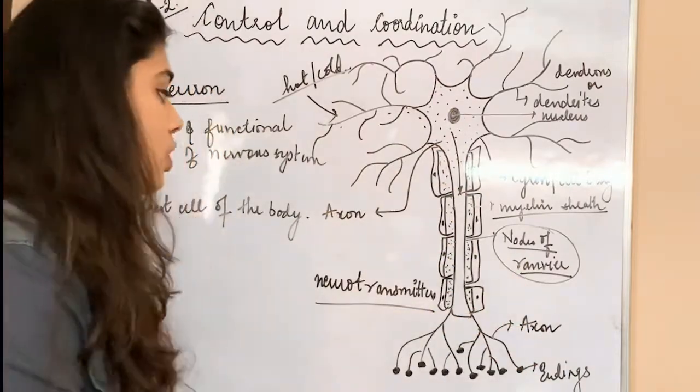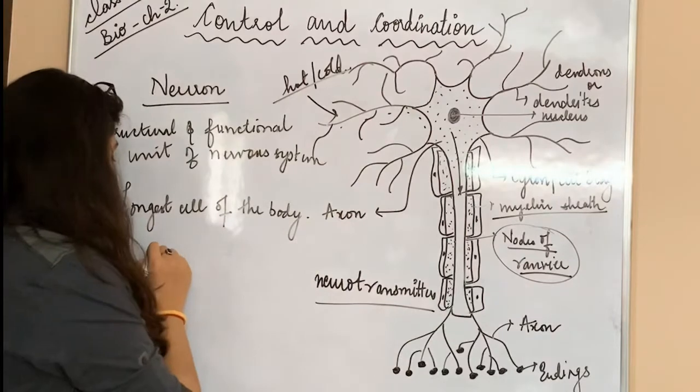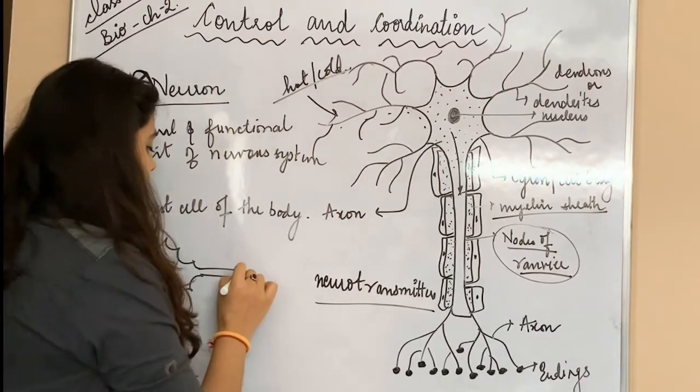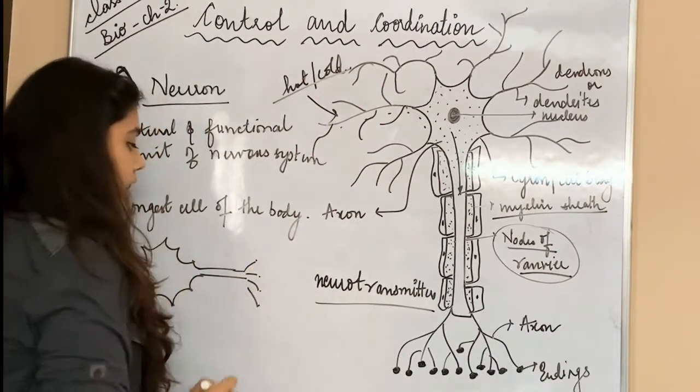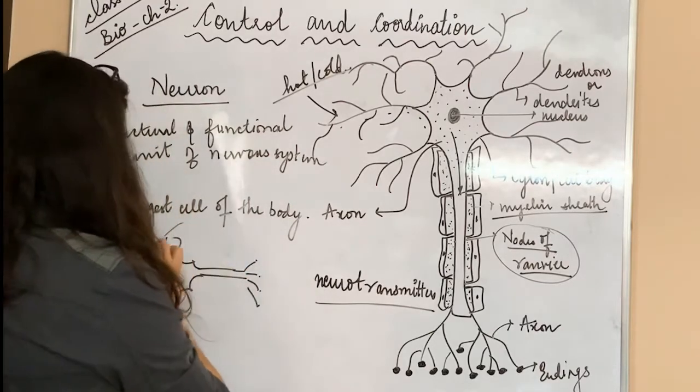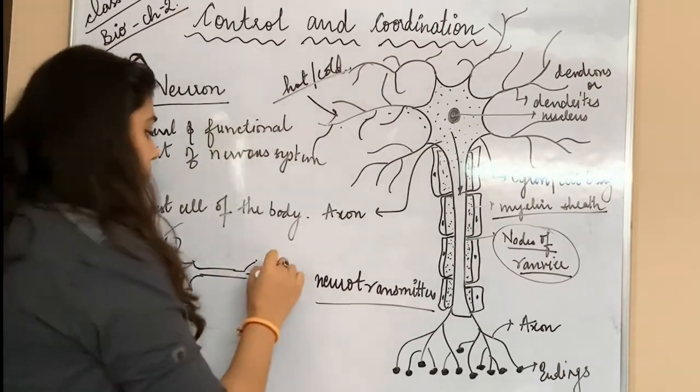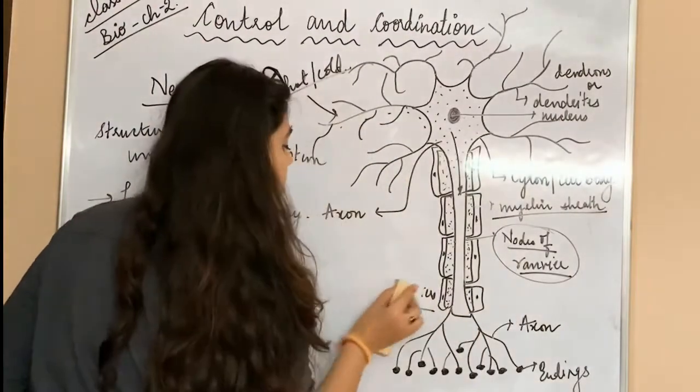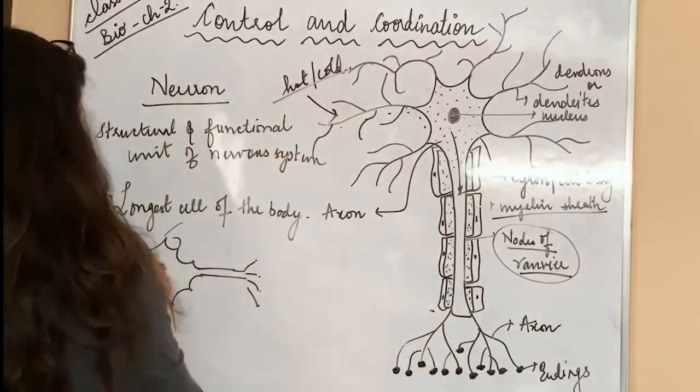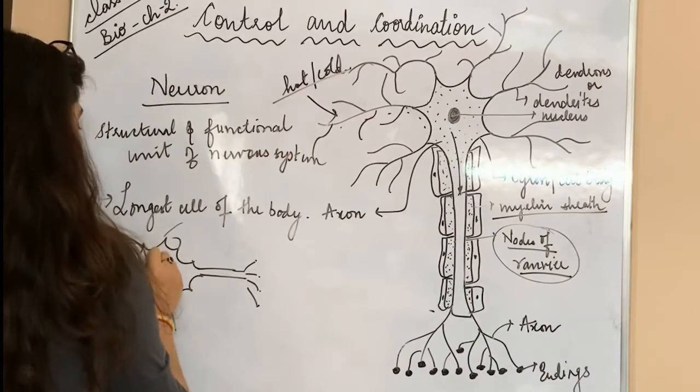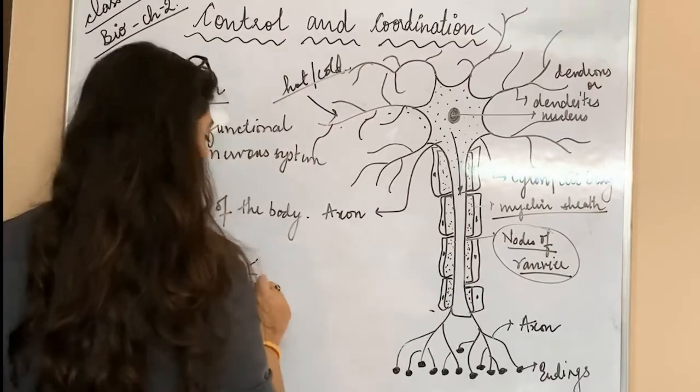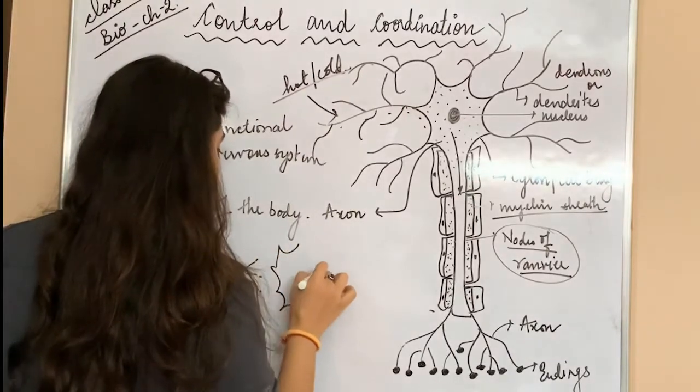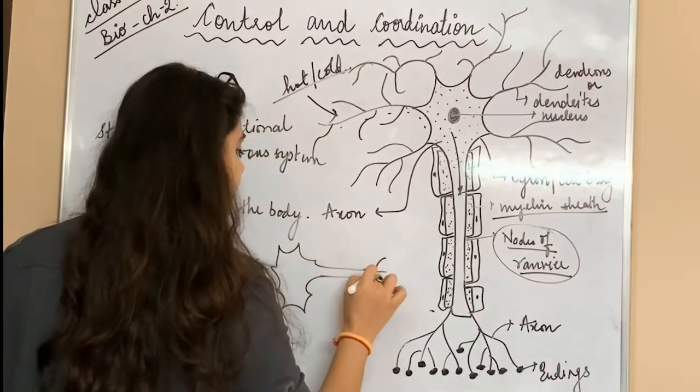And the nodes of Ranvier, here is the axon endings. In the axon endings, I have done this. Here, for example, this is a neuron, its nerve ending is this. Now this is the dendrites, it has taken the signal from the outside. Now here is the signal from the dendrites to the cell body, from the axon.